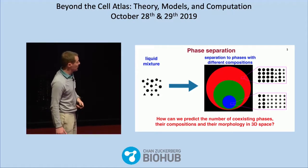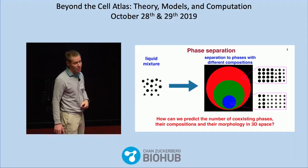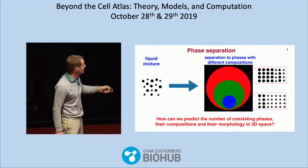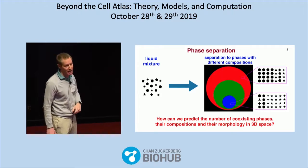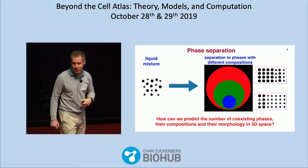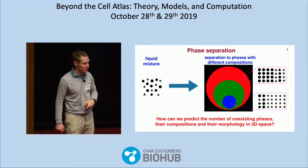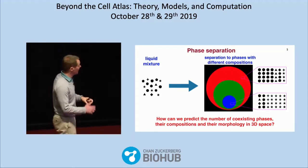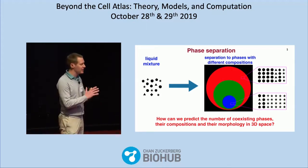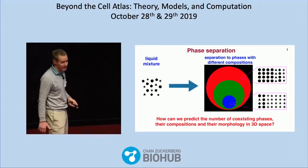I will briefly mention the first part — predicting the number of phases and their compositions — which has been published. For most of the talk I'll focus on their morphology in space, and also how we can reverse-engineer interactions between molecules: if you tell me what sort of structure you would like to have, how should I design the system and what should the intermolecular interactions be? I will assume classical thermodynamics — purely passive equilibrium forces, no activity.